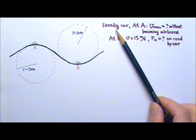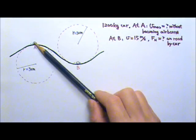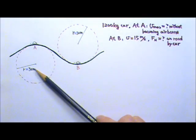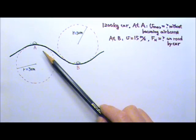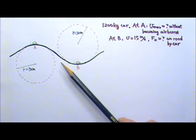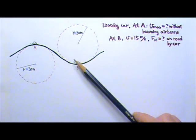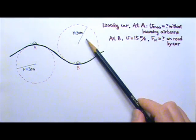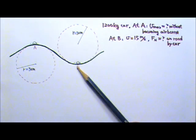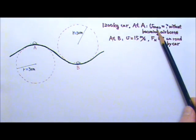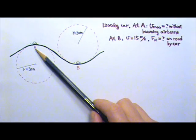A 1200 kilogram car travels on this hilly road. The rounded hill has a 30 meter radius of curvature at the top. Let's call it point A. The rounded dip has a 30 meter radius of curvature at the bottom point B. We're looking for the maximum speed the car can have at point A without becoming airborne.